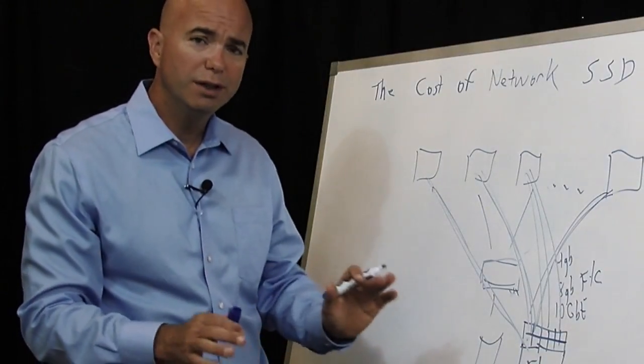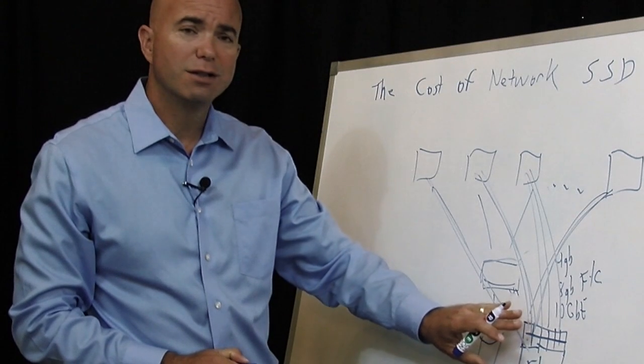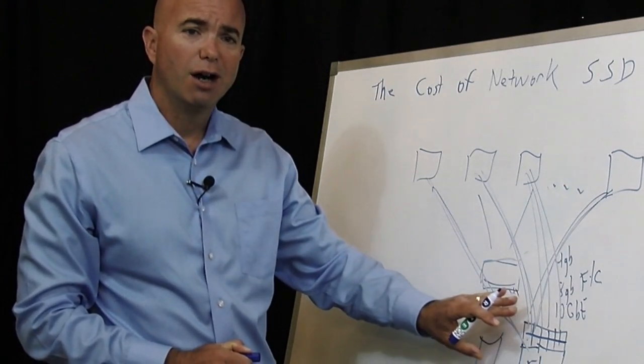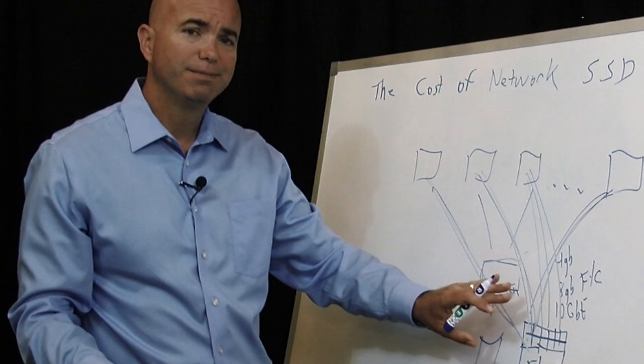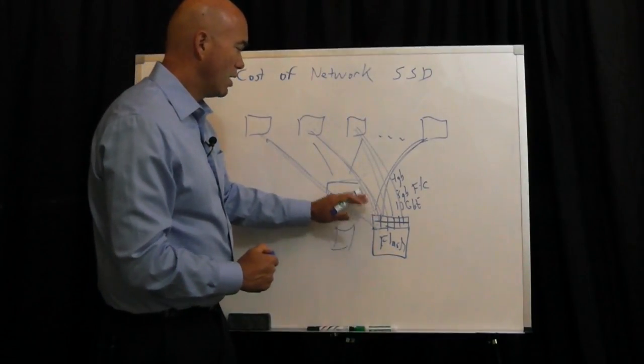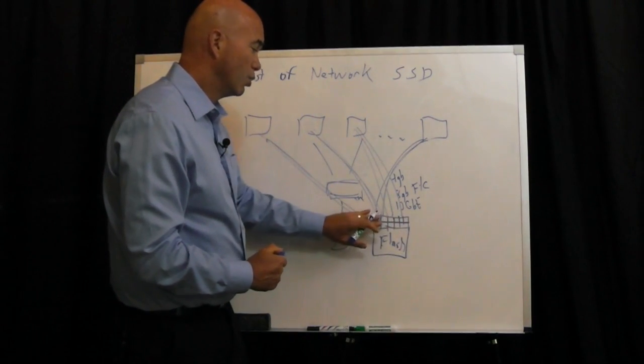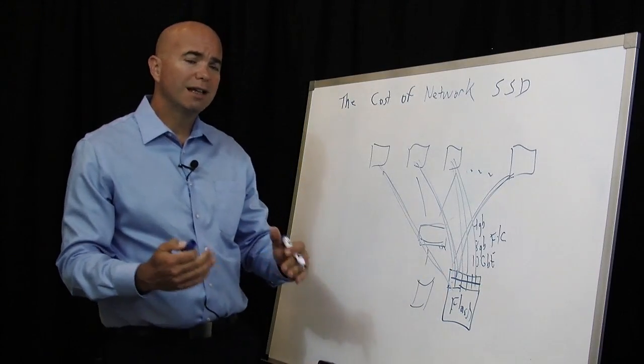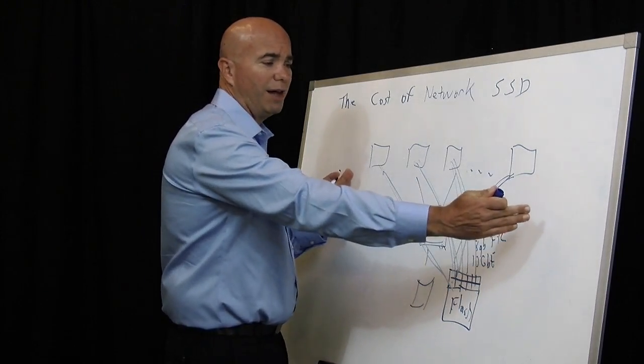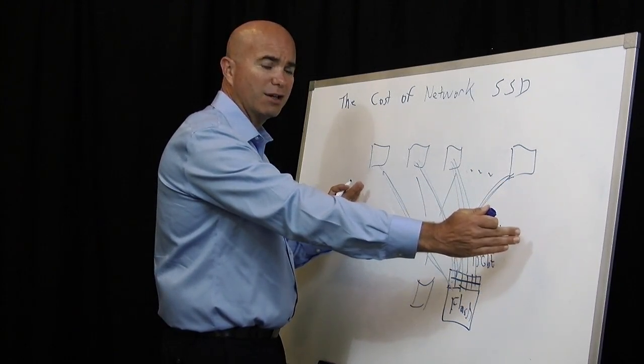The big thing, though, is we've really driven down costs. Four 1 gig connections trunked together are going to be far less expensive than a single 8 or 10 gig connection. And the cost of either upgrading or networking the switch is removed because now it's included with the flash device. So this allows you to really scale out and provide flash storage to more servers in a very cost effective fashion.